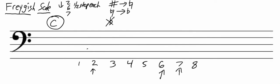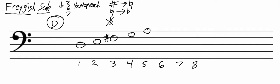We're going to erase this and do another example. This time, let's use the key of D. We will start by writing our D major scale: D, E, F-sharp, G, A, B, C-sharp, D. The second note is E, so when we lower it a half step, we'll make it E-flat. The sixth note is B, so we're going to lower that one half step and make it B-flat. The seventh note is C-sharp, so we will lower that one half step by taking away the sharp and making it natural. This is now your D Fregish scale.